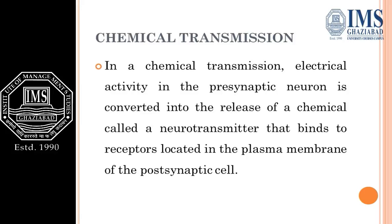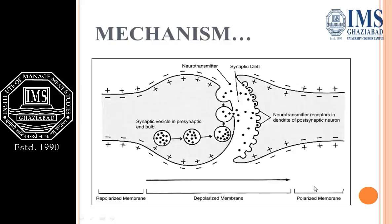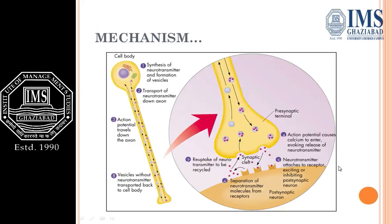In chemical transmission, electrical activity in the pre-synaptic neuron is converted into the release of a chemical called a neurotransmitter, which binds to receptors located in the plasma membrane of the post-synaptic cell. Neurotransmitters are synthesized and transported in vesicles down the axon. The action potential travels down the axon and causes calcium to enter, evoking the release of neurotransmitters.